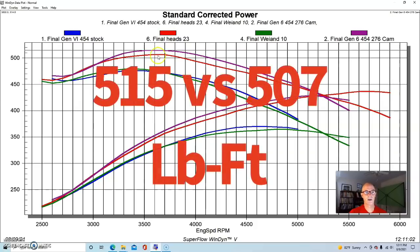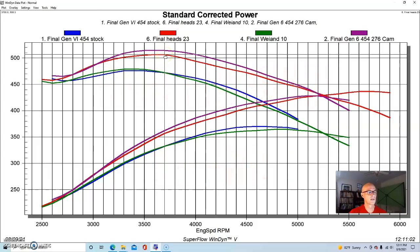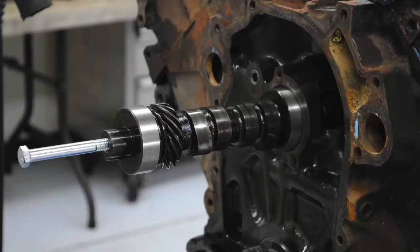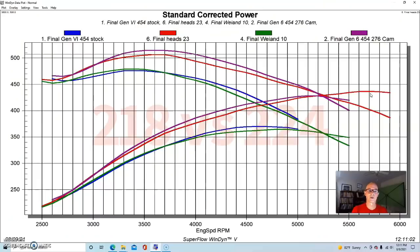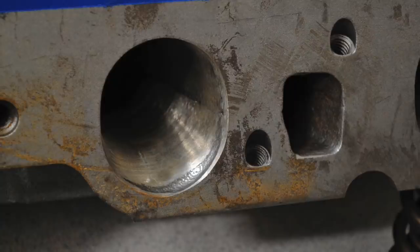515 foot-pounds versus the Ford's 507 foot-pounds, so again six or seven foot-pounds there, a little bit more power. And again remember that the big block Ford had a smaller camshaft in it by six or eight degrees of duration, which is quite a bit. It also was not a hydraulic roller, which the big block was, but the heads on the Ford were worked a little bit. So you guys can argue back and forth about which one of those things mean more.